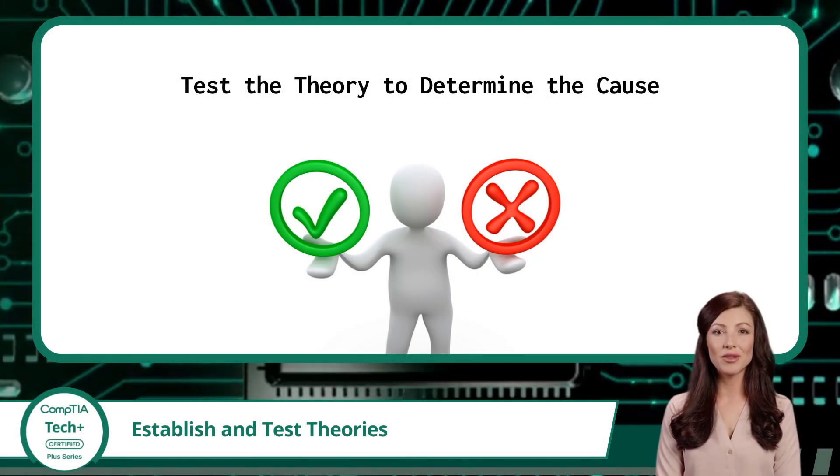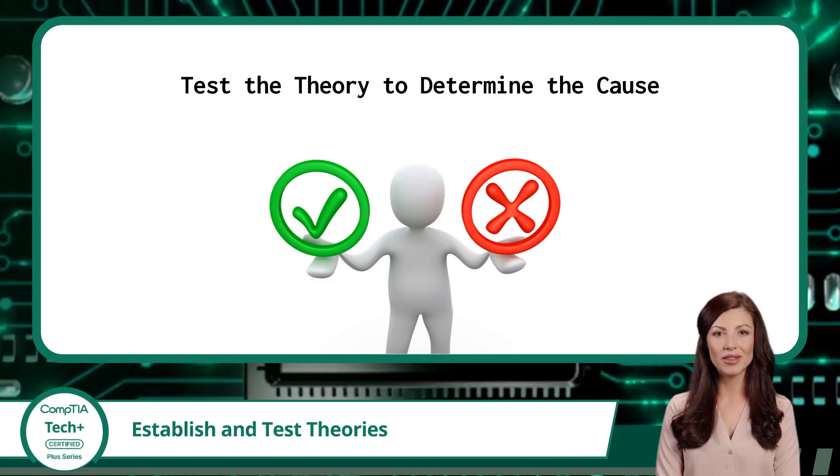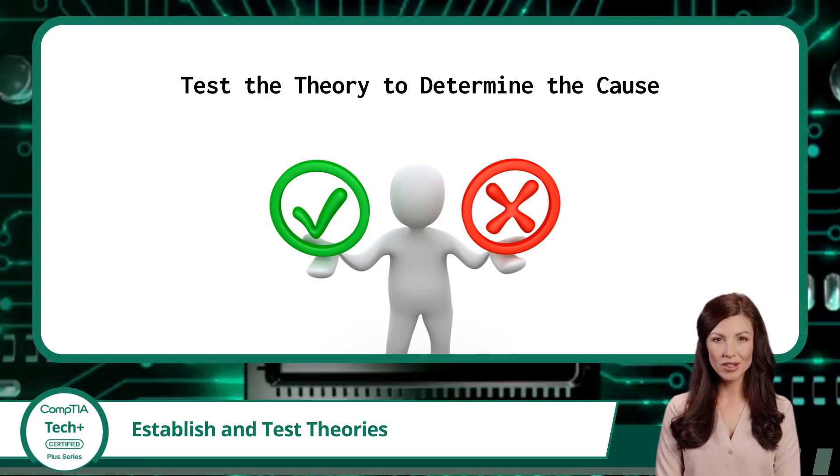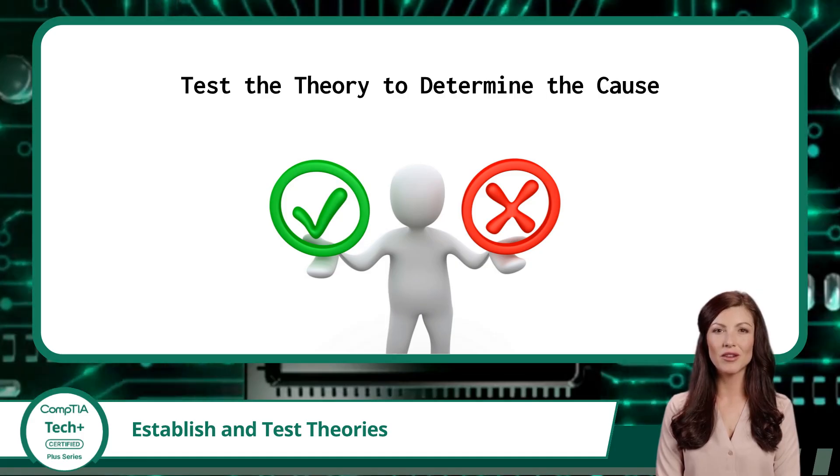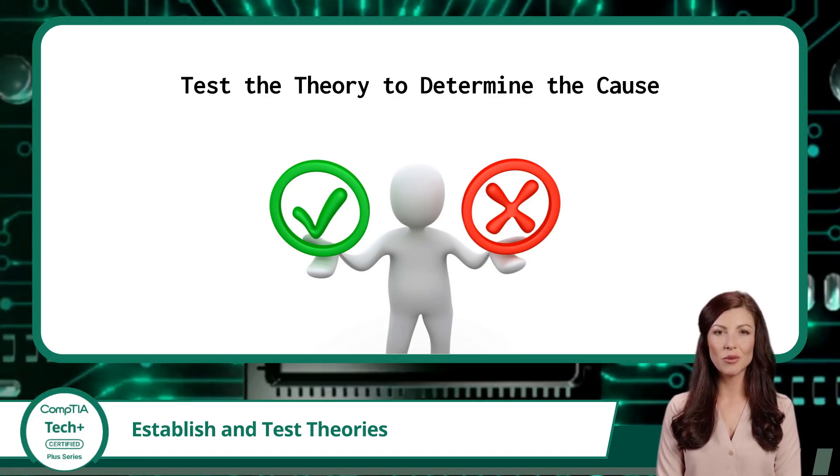Testing a theory will require some kind of experiment or action to confirm the cause of an issue. This can include changing out a component for a known good component or performing an experiment on a test system. Once your theory is confirmed and you have found the root cause of an issue, the next step is to resolve the problem.